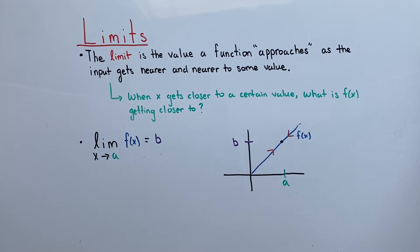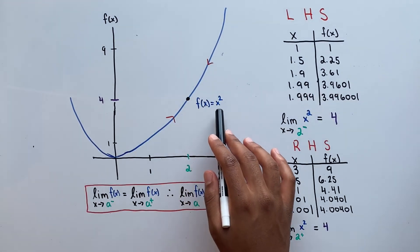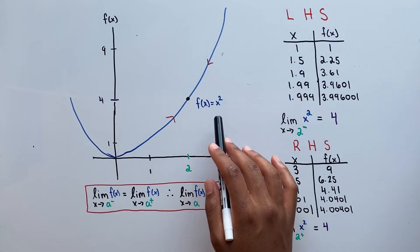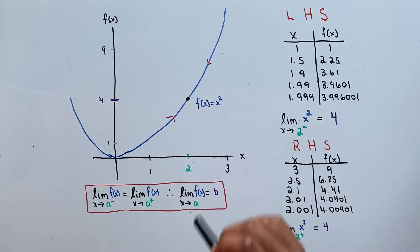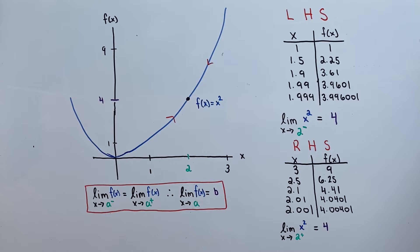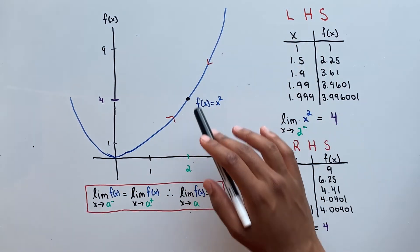If you're still confused, don't worry, because we're about to get into some examples. So over here, we have the function f of x equals x squared, and we want to find the limit of that function as it approaches 2. Like I said in the lecture, we have to take into consideration the behavior of the function from both sides of our desired x.